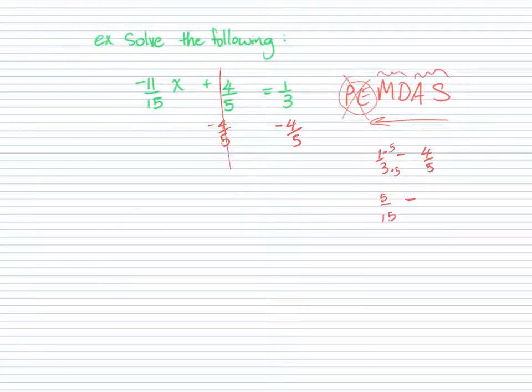And now we have to do something similar to the four-fifths. We want to get to fifteen, so we have to multiply that by three. Whatever we do to the bottom, we have to do to the top, so we have to multiply that by three. And we get twelve over fifteen. And now we can just subtract the top, subtract the numerator. So five minus twelve gives us negative seven over fifteen.